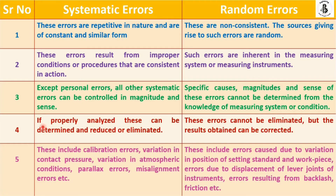Fourth: for systematic errors, if properly analyzed, these can be determined and reduced or eliminated — so you should control them. In summary, systematic errors are controllable, but random errors are not controllable and cannot be eliminated — they may occur at any time, by any person, under any atmospheric conditions.